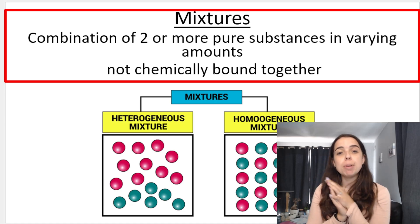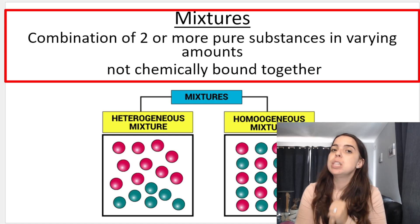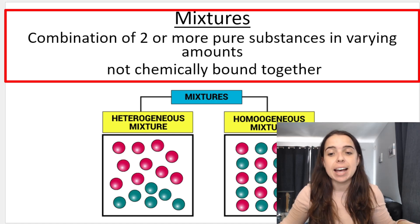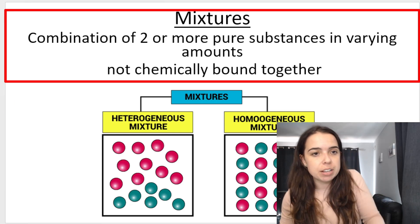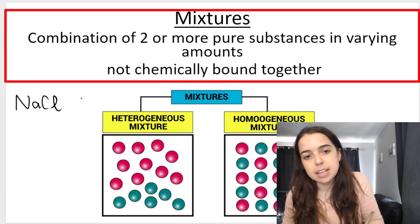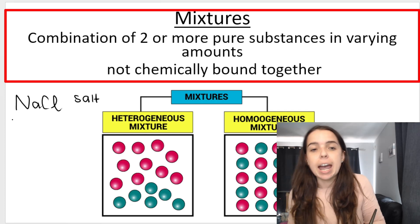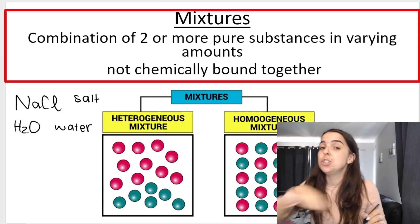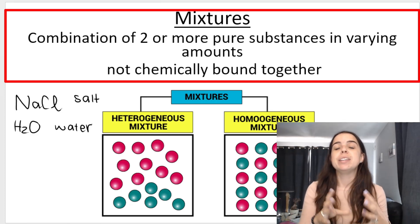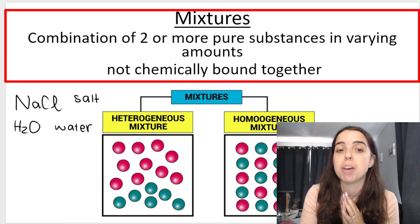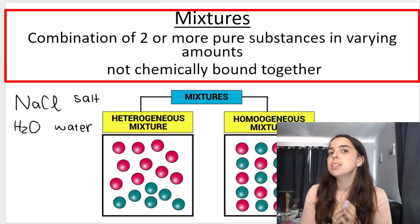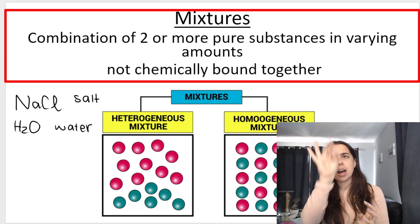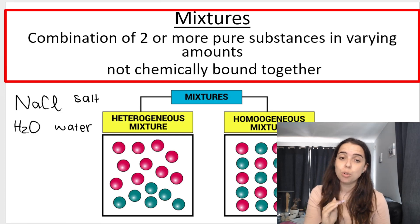The example I gave in the previous video — and I think it's a very good example — is if you think about salt water. If you take table salt, NaCl, and you take H₂O pure water and add the salt to the water and stir it up, you're going to get what we call a solution, which is a type of mixture. What I need you to understand is that although you can no longer see the salt — all you see is a water liquid mixture — the salt is dissolved in the water.